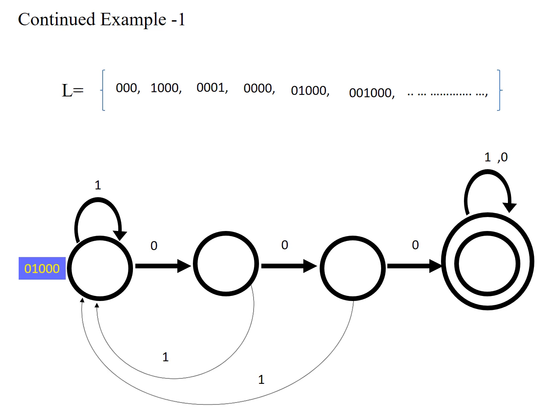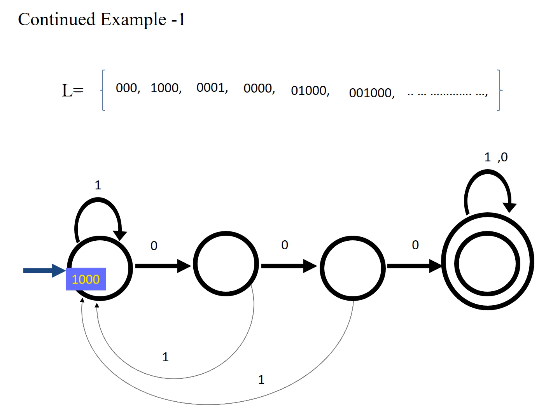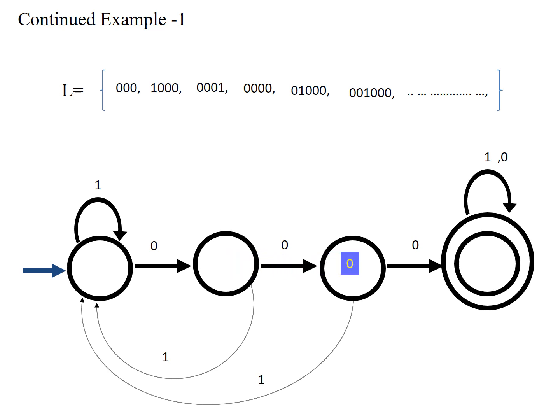Let me animate one more string for better understanding — '01000'. First, zero comes so we go to the second state. Then one comes, and we go back to the beginning state. Then three more zeros follow — that is the linear case — all three zeros are accepted. So this string is also accepted. I hope you have a clear understanding of this problem.